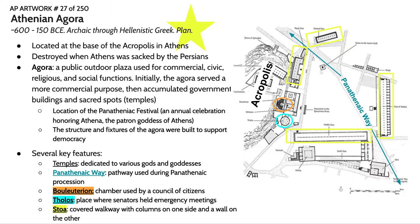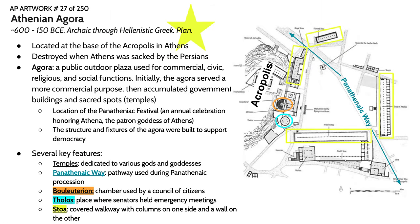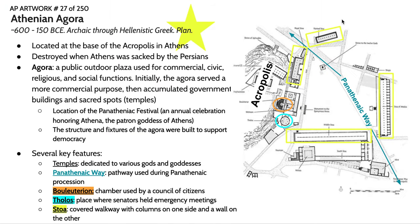Our first AP artwork from ancient Greece is the Athenian Agora. The Athenian Agora nowadays is basically just ruins. The Agora, as well as the Acropolis — which we'll study in the next lecture — were destroyed by the Persians in around 480 BCE. An Agora is a public outdoor plaza used for commercial, civic, social, and religious functions. Initially this Agora served as a more commercial area with lots of shops and vendors, but over time, as aspects of democratic government came in, government buildings and sacred spots like temples were built in the Agora.